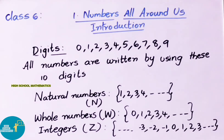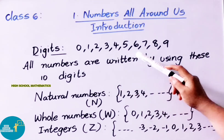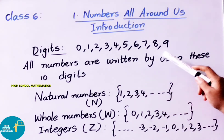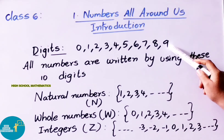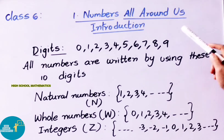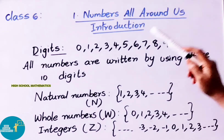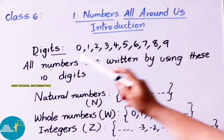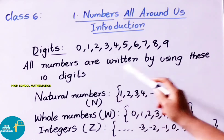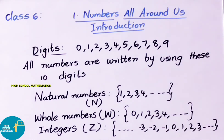First, let us understand what digits are. The digits are: 0, 1, 2, 3, 4, 5, 6, 7, 8, 9. We call these digits. Using these digits, we write any number. So all numbers are written by using these 10 digits.